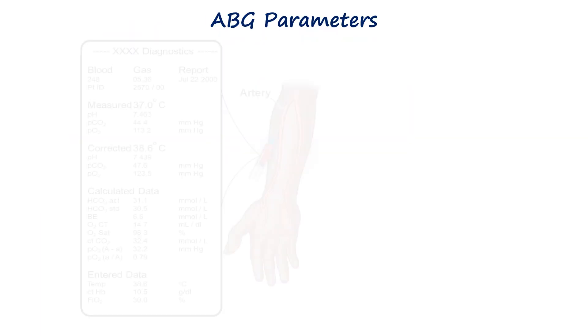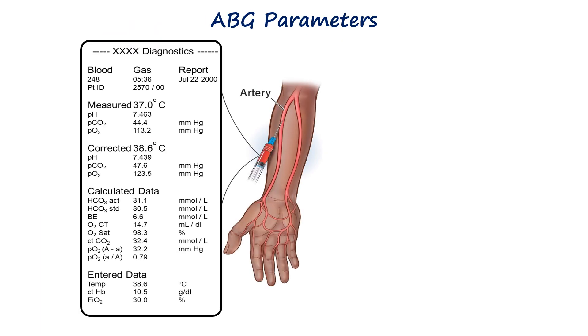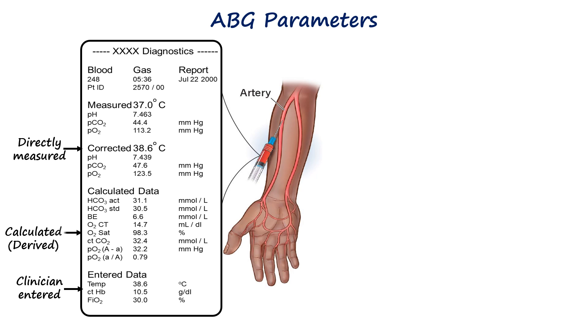A typical ABG report contains three types of parameters: clinician-entered values, directly measured values, and calculated values.